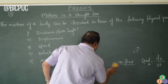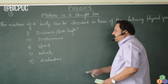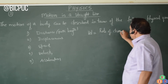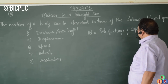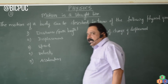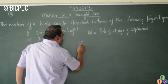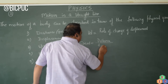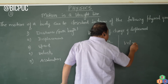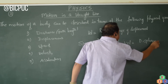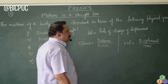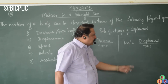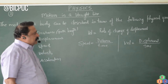The next physical quantity used to describe motion is velocity. Velocity is the rate of change of displacement. Note that speed is the ratio of distance to time, whereas velocity is the ratio of displacement to time. Velocity is defined as the rate of change of displacement of a particle, or displacement divided by time taken. There are four types of velocity.